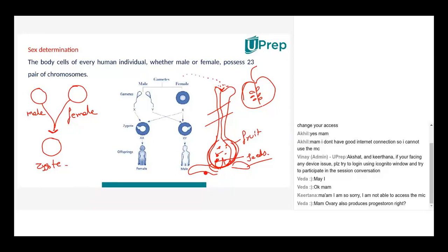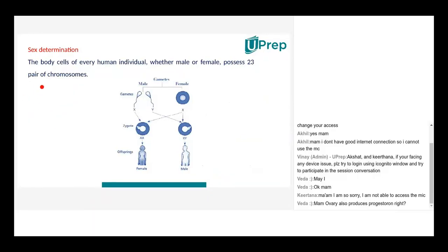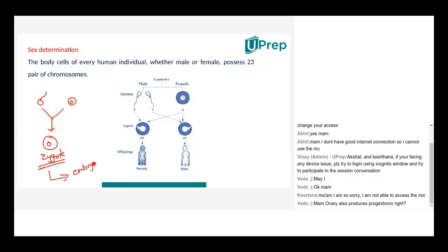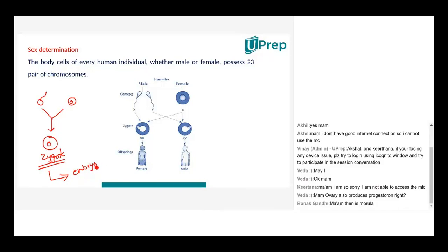Similarly in human beings, when the sperm cell fuses with the egg, proper fertilization occurs and a zygote is formed with a proper nucleus. The zygote is always a single cell. Through several stages over several months, it converts into an embryo — a bigger mass of cells.